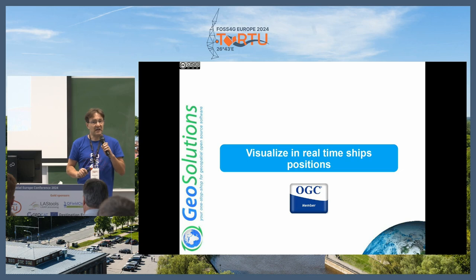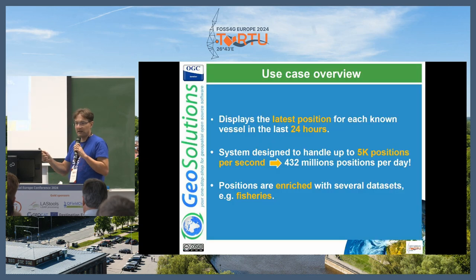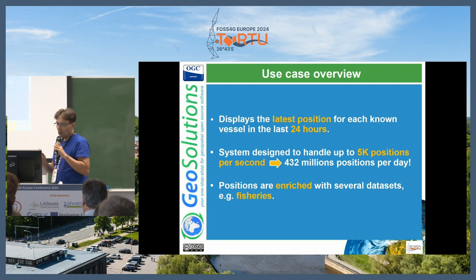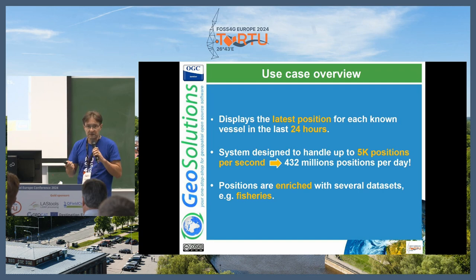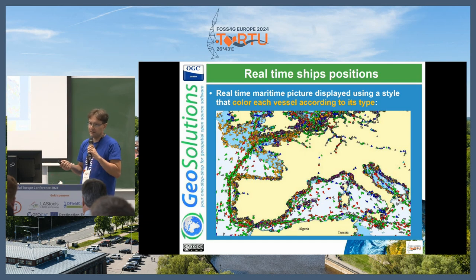Now a couple of use cases: one that deals with velocity and one that deals with volume. Visualize in real time the ship positions — we display the latest position every two seconds on the client for all ships together. All the ship positions come in, they are validated, enriched, and processed in general, and then added into a database that GeoServer uses.